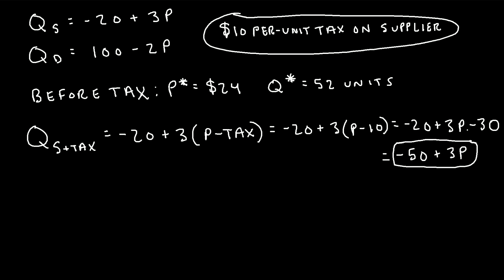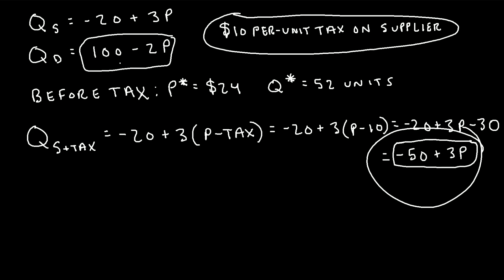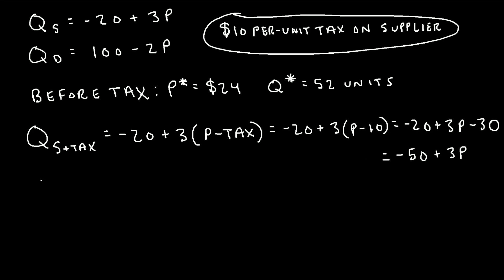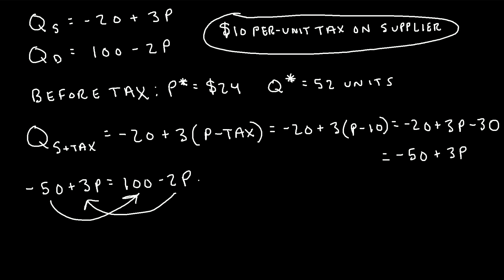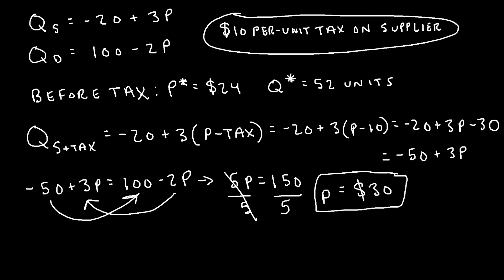To find the new market equilibrium, we set this new supply equation equal to the original demand equation — the demand equation does not change. So we say negative 50 plus 3p is equal to 100 minus 2p. Adding 2p to one side and 50 to the other gives 5p is equal to 150. Dividing both sides by 5, p is equal to 30. So the new market equilibrium price is $30.